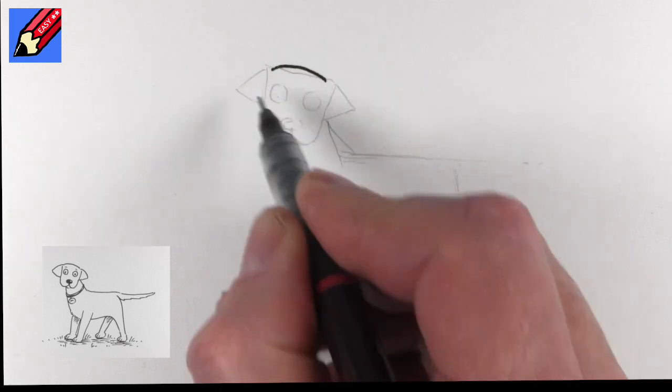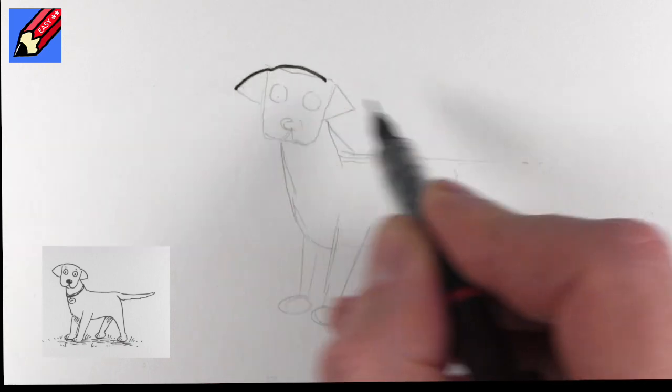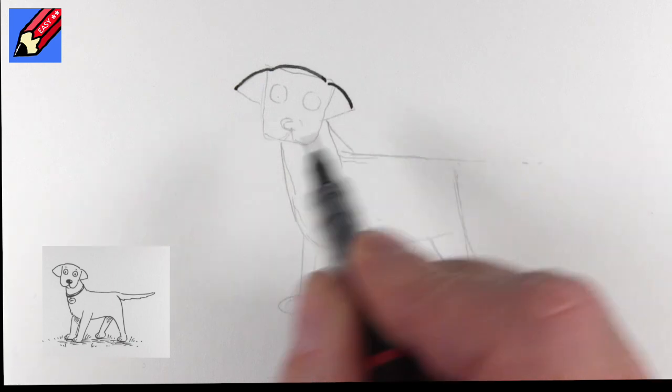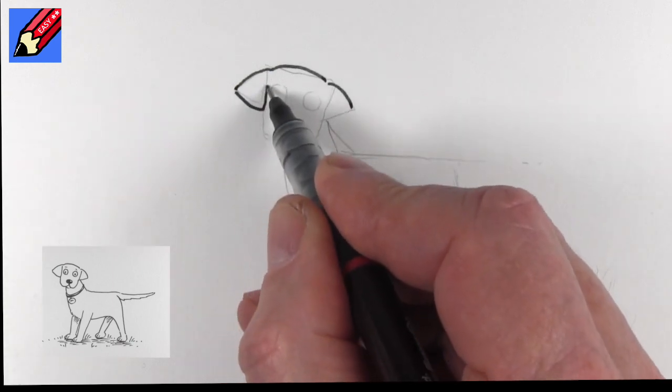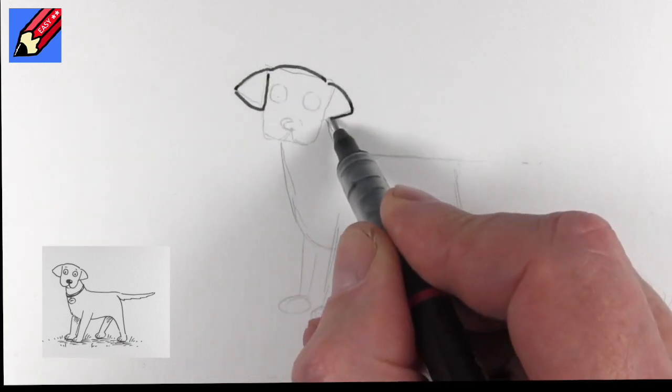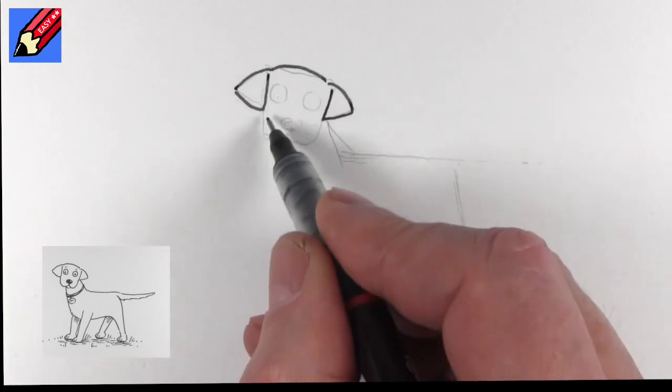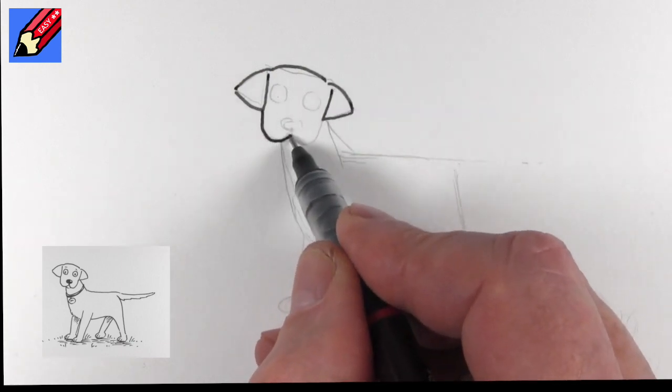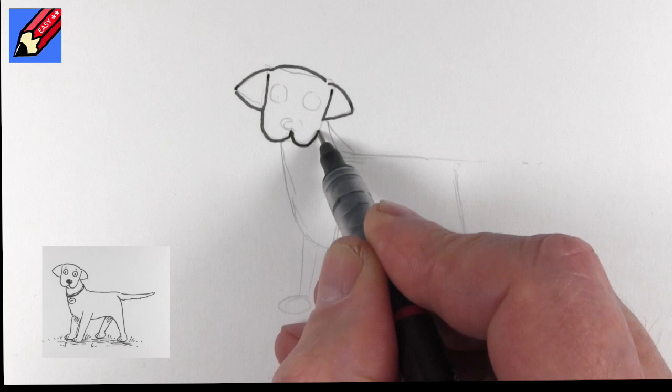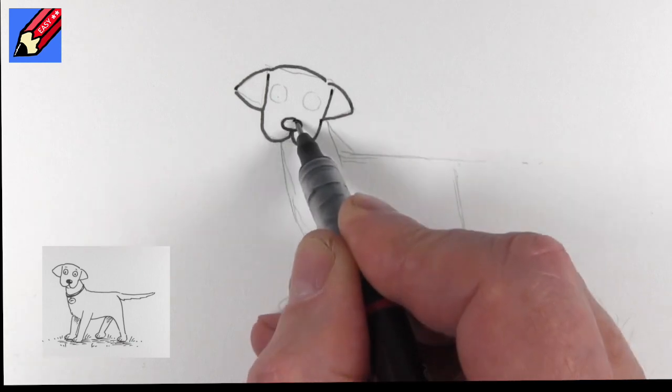Now on the top here I'm going to curve that slightly and then curve slightly on the ear that will come down and up there, down and up like that. Then we can bring this around and up and then we're going to want the nose.